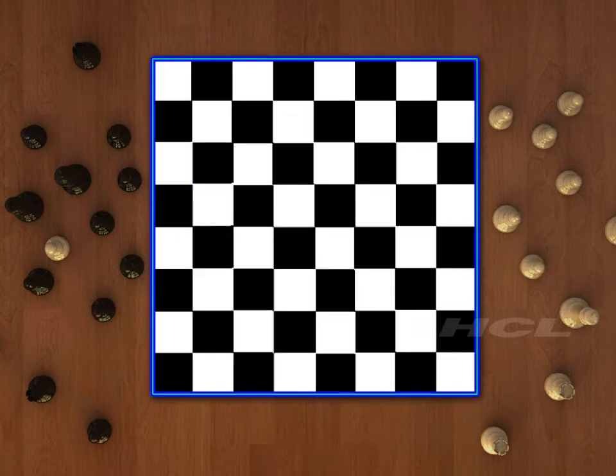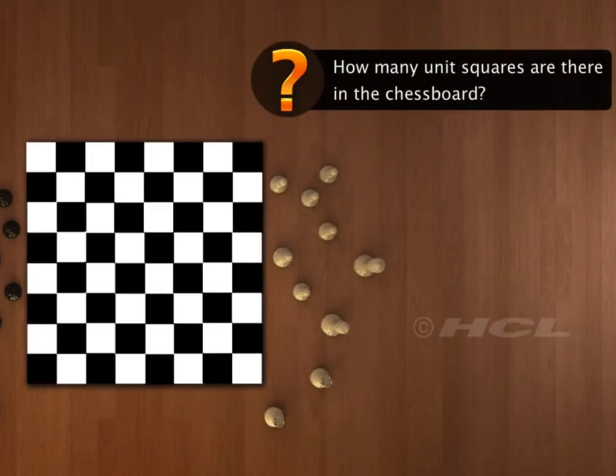The biggest square can be of dimension 8×8. Do you know how many unit squares are there in the chessboard? Let's count.